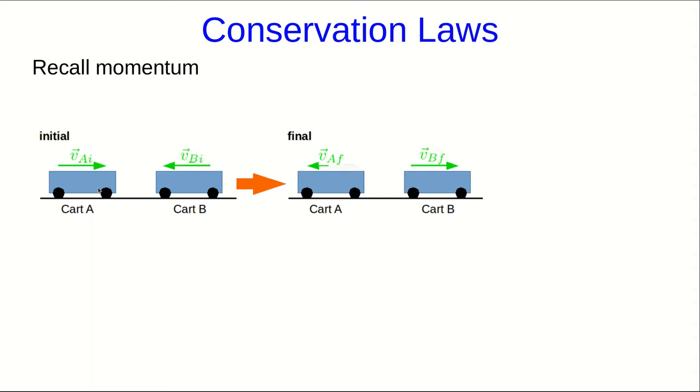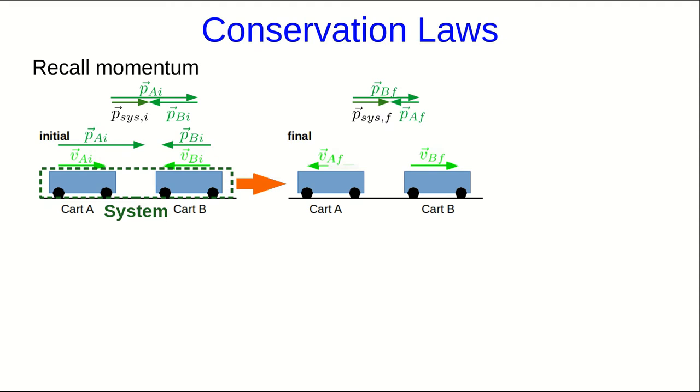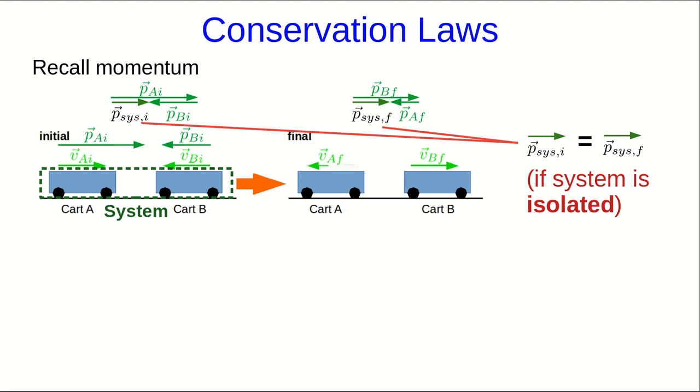To start, let's just talk about the general idea of a conservation law, and you've seen this with momentum. If we have a system, say two carts, in some initial state, then we can connect that with its final state using conservation of momentum. So if we know the momentums at the start, and we define the system as the two carts, then the total system momentum is just the sum of the two individual momentums, and we can do the same thing with the final state, and as long as the system is isolated, the initial and final momentums are the same, and we can use this equation to solve for things.